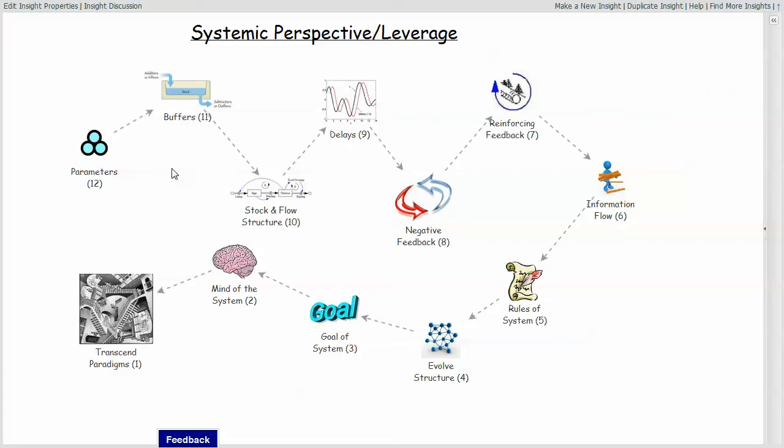And the way that I use this diagram is I simply have it in front of me, and I look at the different leverage points and think about the model that's been developed for the current situation and ask myself, where are these different types of things that can be affected within that model that will produce a desired alteration? So the first one has to do with parameters, just simply changing constants or parameters or numbers in different places within the system. This is the lowest leverage point. It's not expected to produce a lasting change within the system.